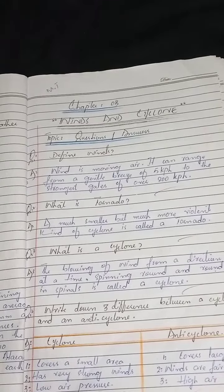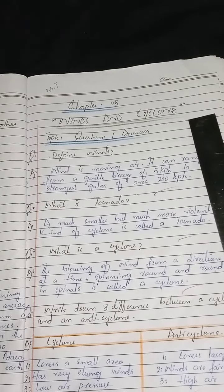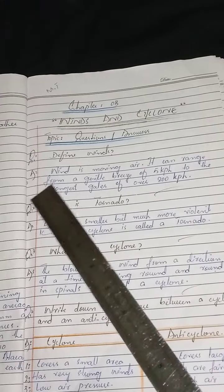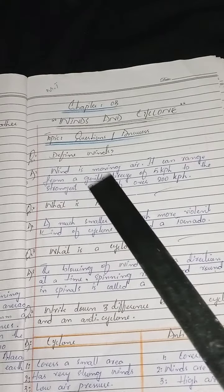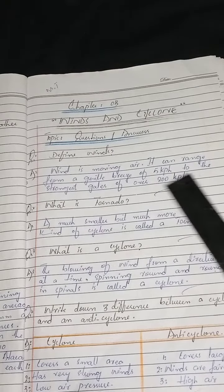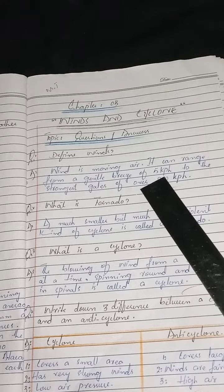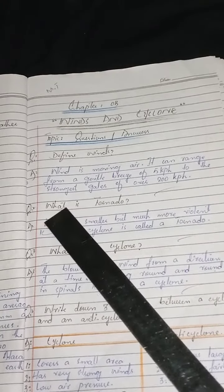Today we will do the question answers of this chapter, Winds and Cyclones. Question number one: Define winds. Answer: Wind is moving air. It can range from a gentle breeze of five kilometers per hour to the stronger gaze of over 200 kilometers per hour.